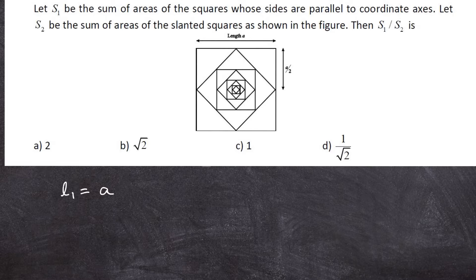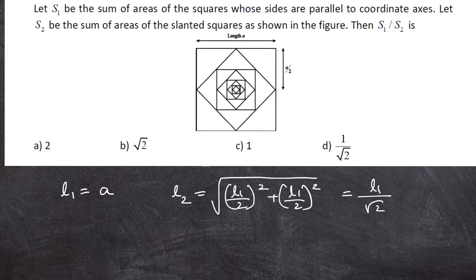The next square has side length L2 and that is obtained by root over L1 by 2 the whole square plus L1 by 2 whole square. That is L1 by root 2. That is A by root 2.